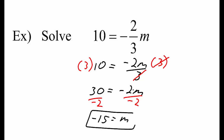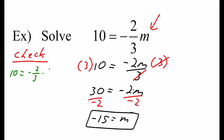Let's check and make sure it works. We'll substitute negative 15 in for m. We can rewrite that as 10 equals negative 2 times negative 15 divided by 3.